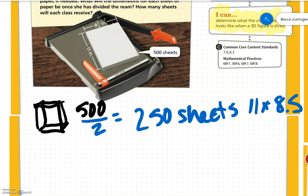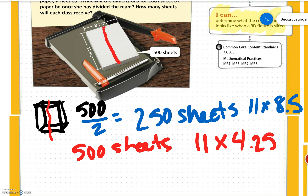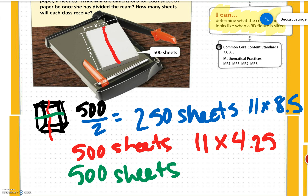But there's another way we could slice it. We could slice it down the middle lengthwise. That would mean each class would get 500 sheets, but they wouldn't be the same size — the sheets would be 11 by 4.25, because we cut it down the middle widthwise. We could also cut it down the middle hot dog style. Each class would still get 500 sheets, but instead of 11 inches, it would be 5 and a half inches by 8 and a half inches.